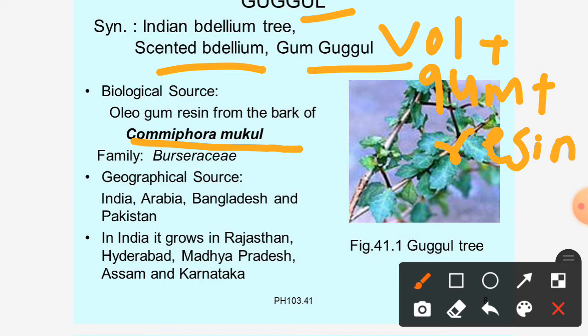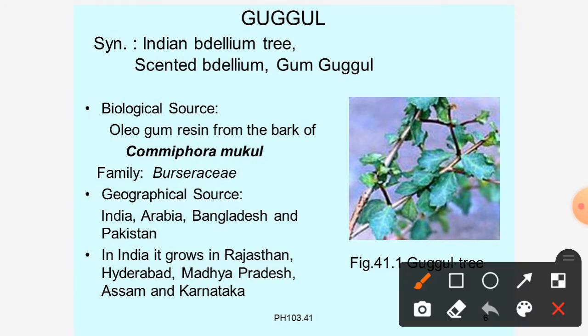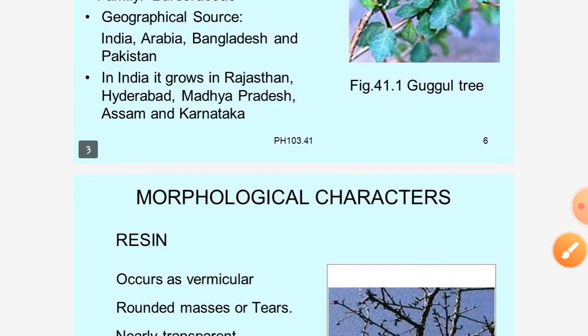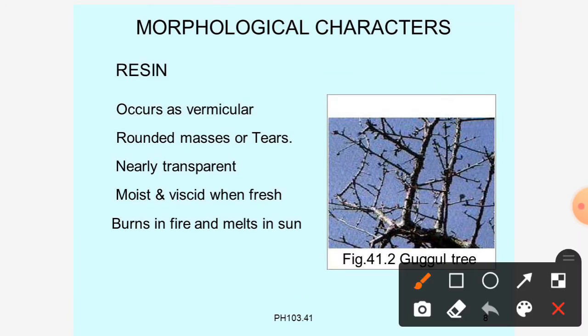The family is Burseraceae. Geographical distribution includes India, Arabia, Bangladesh, and Pakistan. Guggul is obtained in the form of oleogum resin from the bark of Commiphora mukul, family Burseraceae. Its synonyms are Indian Bdellium — note the 'b' is silent — Scented Bdellium, and Gum Guggul.